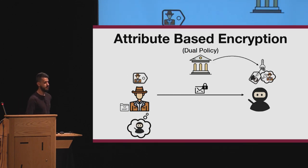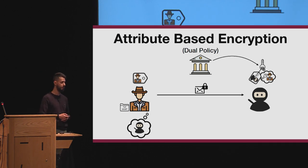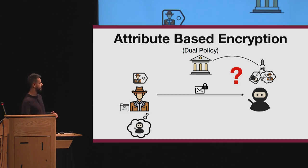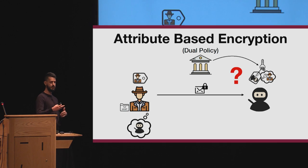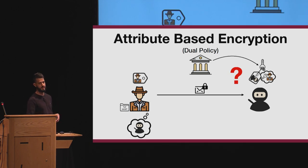There is a third type called dual policy ABE, where there are two policies and the receiver's policy is contained in the decryption key together with the attributes. In this case the two schemes are incomparable: the main difference is that dual policy has a single key while matchmaking encryption has two, and in matchmaking encryption the receiver can interleave multiple keys, which is not possible in dual policy. Moreover, dual policy doesn't achieve match security, because it's always possible to see if a policy is satisfied or not.